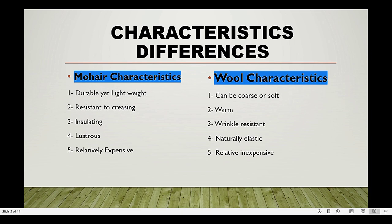Regarding characteristics: mohair is durable yet lightweight, resistant to creasing, insulating, lustrous, but relatively expensive. Wool, in comparison, is warm, wrinkle-resistant, naturally elastic, and relatively inexpensive compared to mohair.